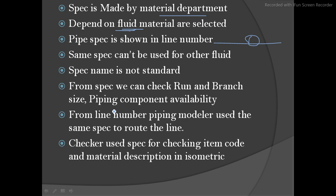For branch size — if you have a main size of 10 inches and a branch connecting to 4 inches, you don't know whether to take a reducing tee or a stub-in. So you go to the spec and check what exactly is specified for 10-by-4. From there you can determine whether to do a weldolet or some other branch connection. Whatever branch connection is required, you can find it in the specification.